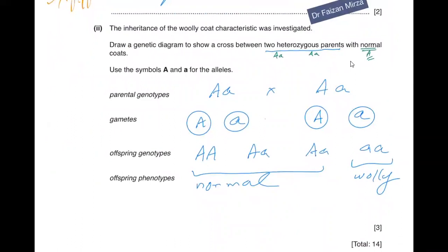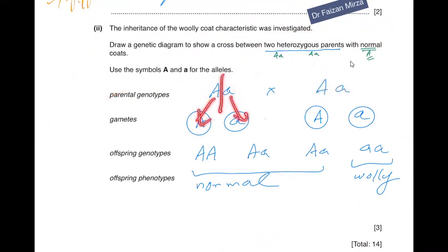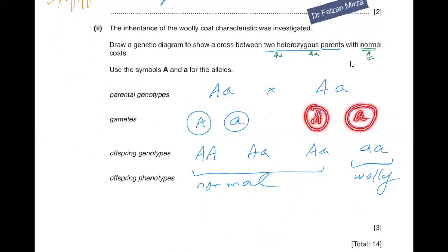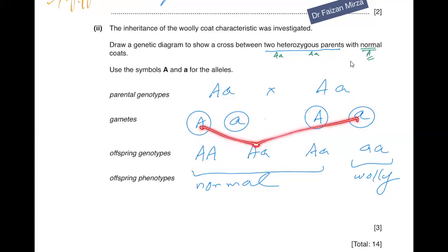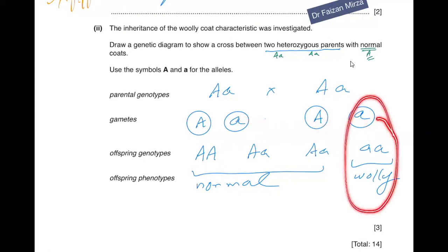For the genetic cross between two heterozygous parents with normal coats (normal coat being dominant), both parents are Aa × Aa. Gametes from each parent are A and a. The offspring genotypes are AA, Aa, Aa, and aa. There are three chances of normal coat offspring and one chance of woolly coat offspring — so there is a 25% chance of the woolly phenotype in this cross.